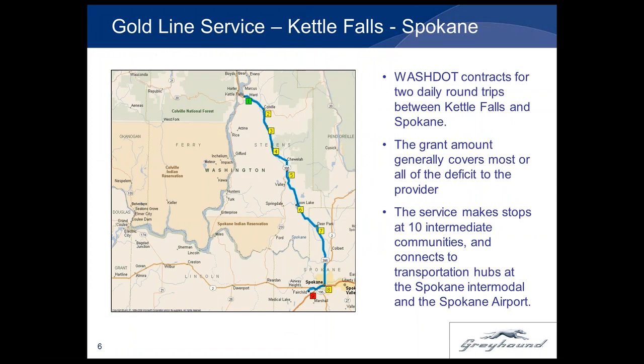A good example of how in-kind match works is the Washington DOT program. In this case, Washington manages the process and contacts Greyhound directly, telling us what services it needs for match. Greyhound requests schedules, grant amounts, and contract terms for each route, then validates the availability of match and issues commitment letters to the state, renewed with each contract and revised as necessary. In this case Greyhound is not a subrecipient, but the process is not significantly different when Greyhound is providing match for its own subsidy.